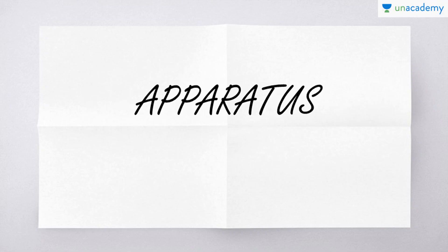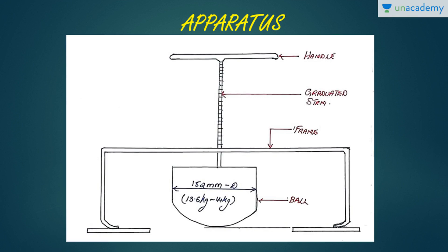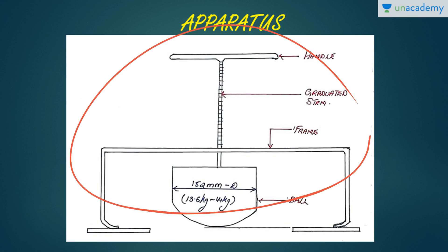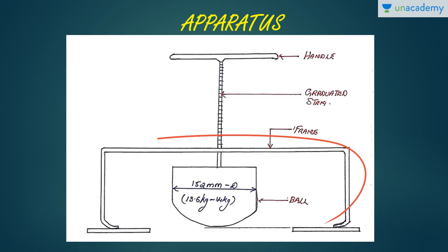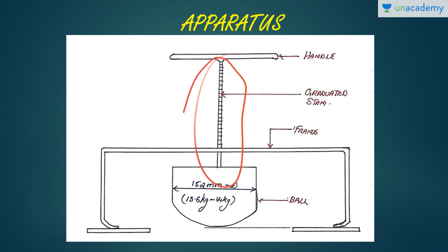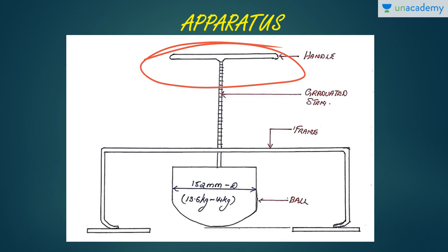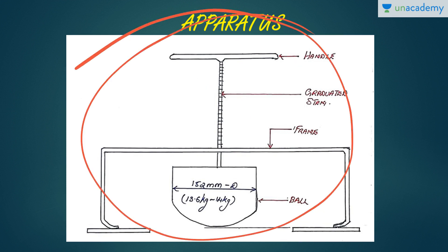The apparatus for the Kelly Ball test is very simple — just one apparatus called the Kelly Ball apparatus. This is the ball used to penetrate or sink into the concrete matrix. The ball is approximately 152 mm in diameter and weighs between 14 to 30.6 kg. There is a frame to attach the ball, connected by a graduated stem — these are the graduations where you take readings. The handle allows you to hold and lower the entire apparatus for the penetration.